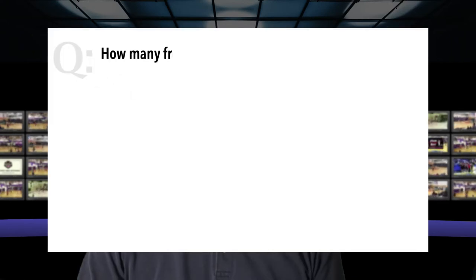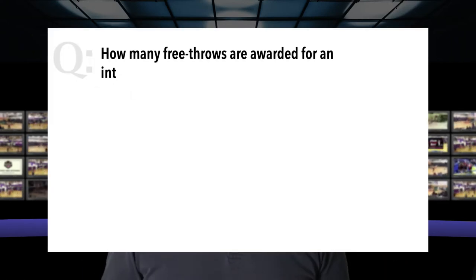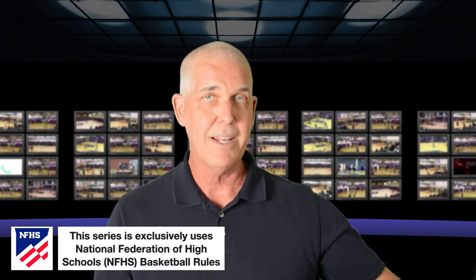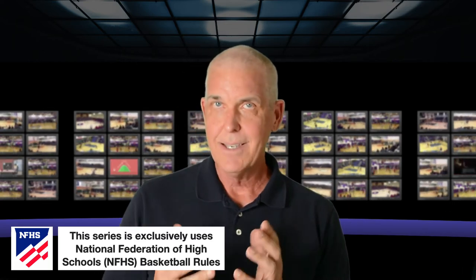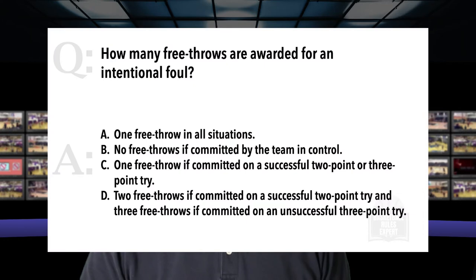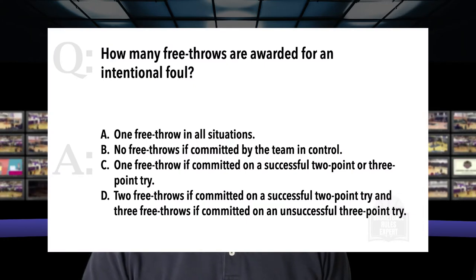Here's our follow-up question: How many free throws are awarded for an intentional foul? It's always two free throws to the offended player or their substitute, plus the ball at the spot nearest the foul — unless it's a missed three-point attempt, in which case it's three free throws and the ball at the spot nearest the foul. And our answer is D: two free throws if committed on a successful two-point try, and three free throws if committed on an unsuccessful three-point try.